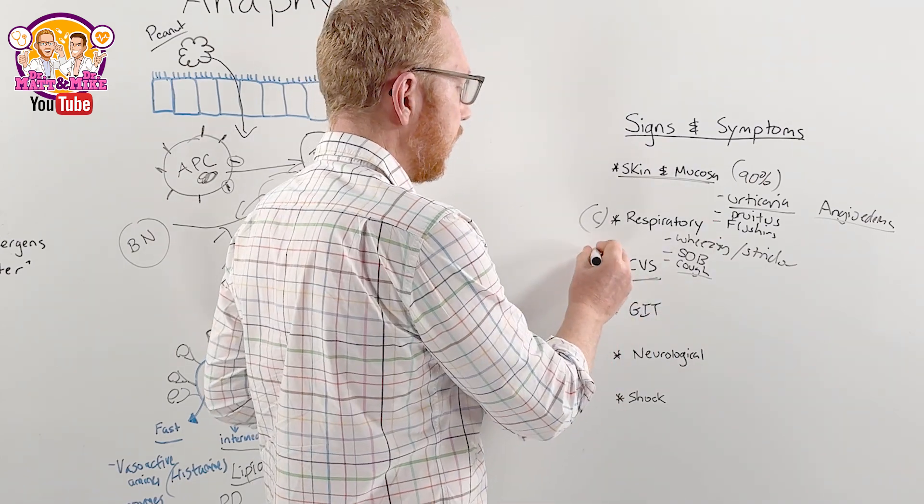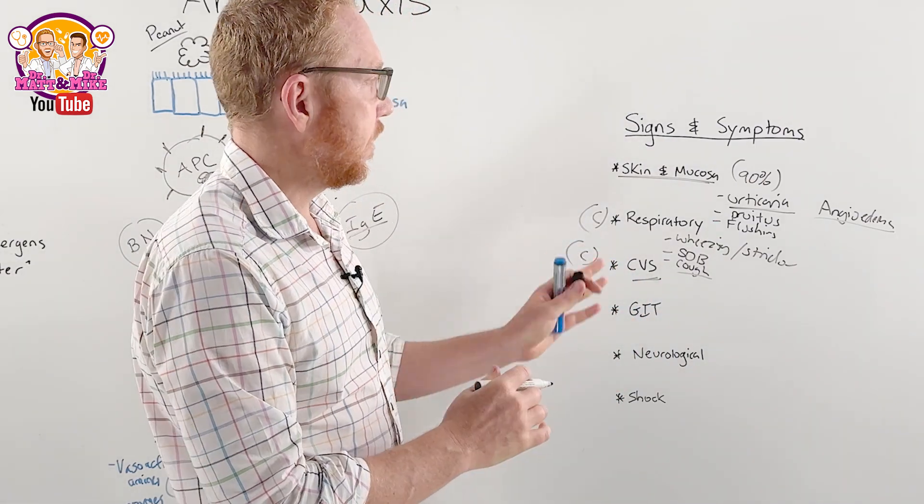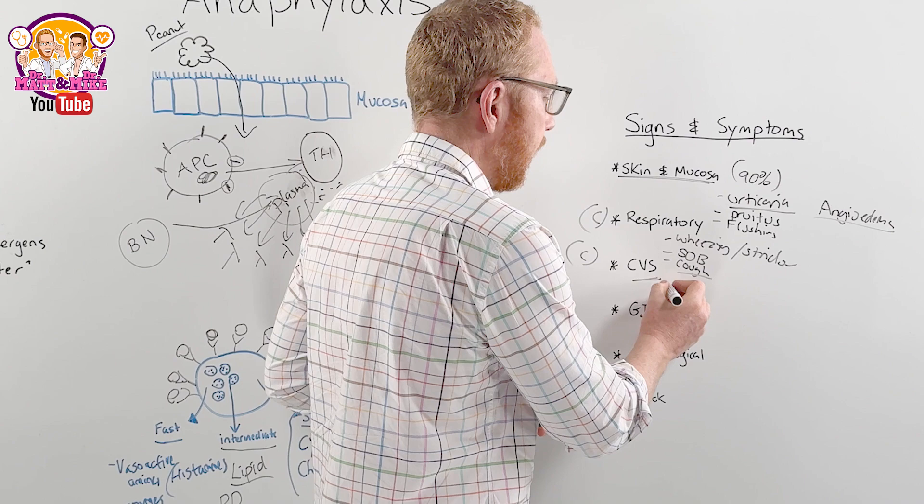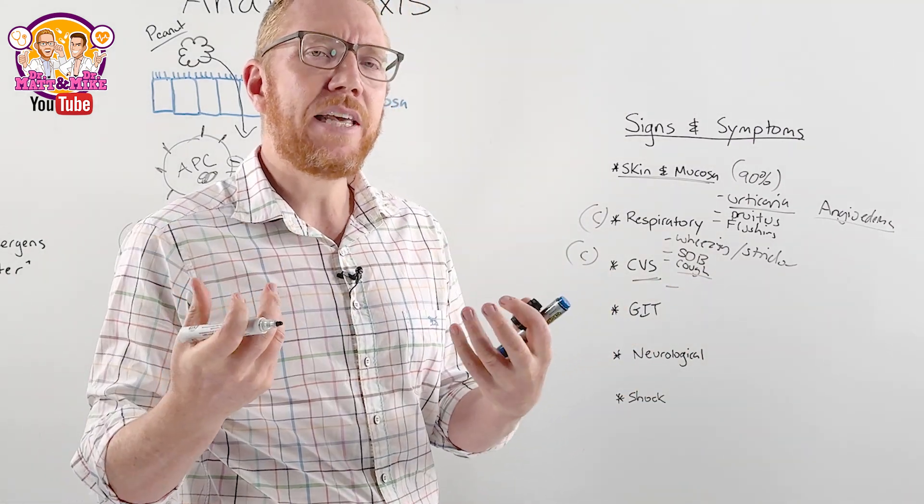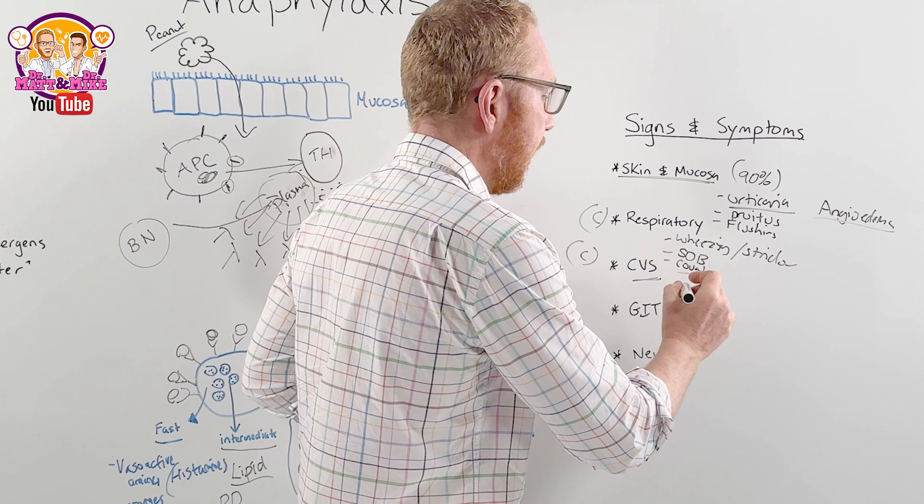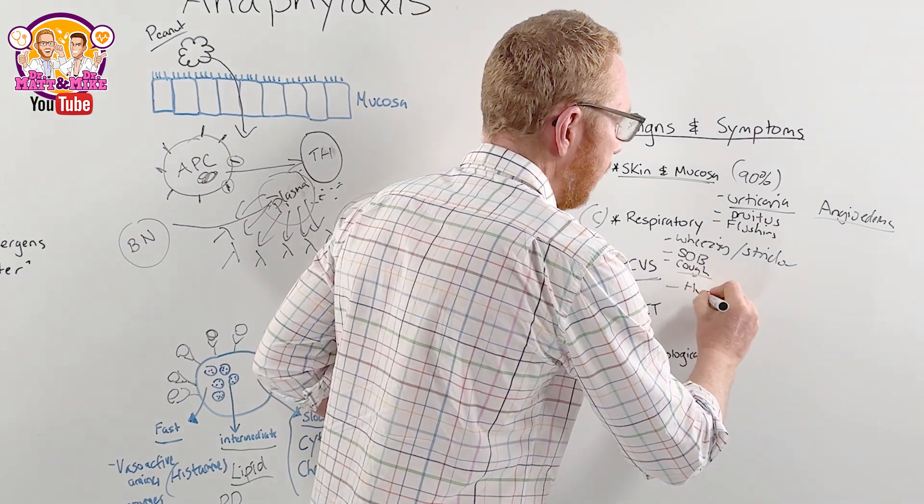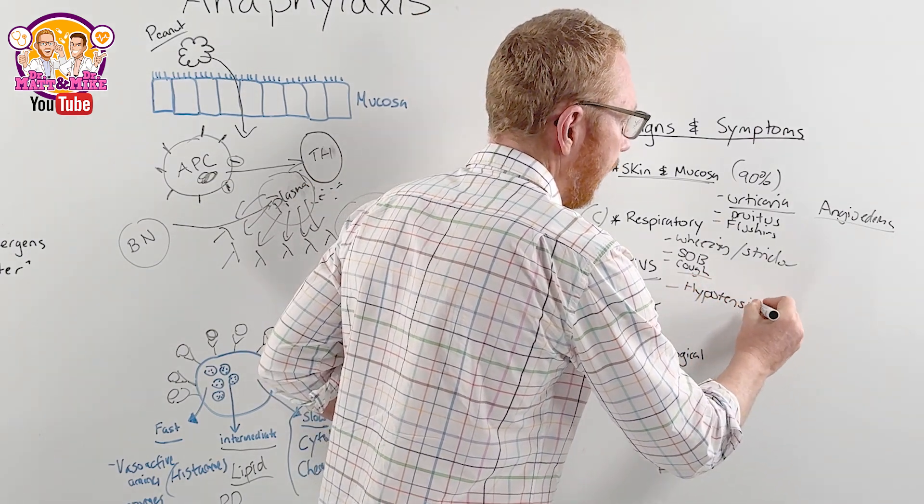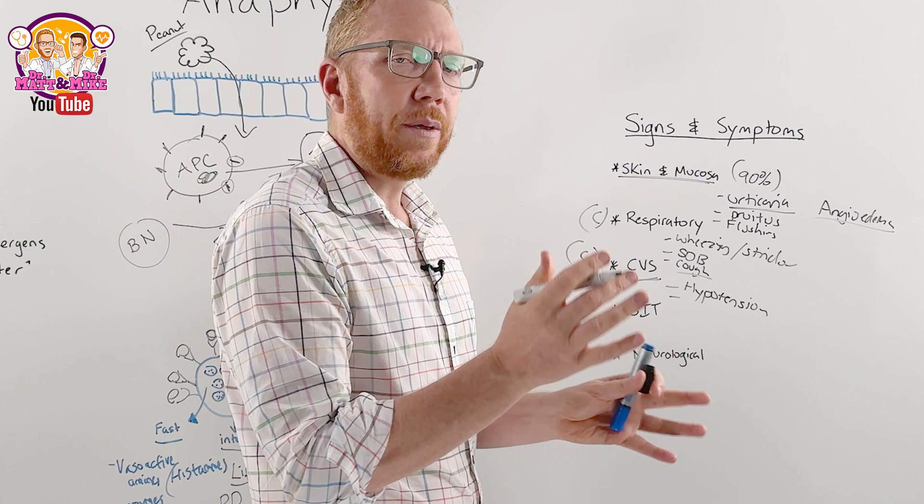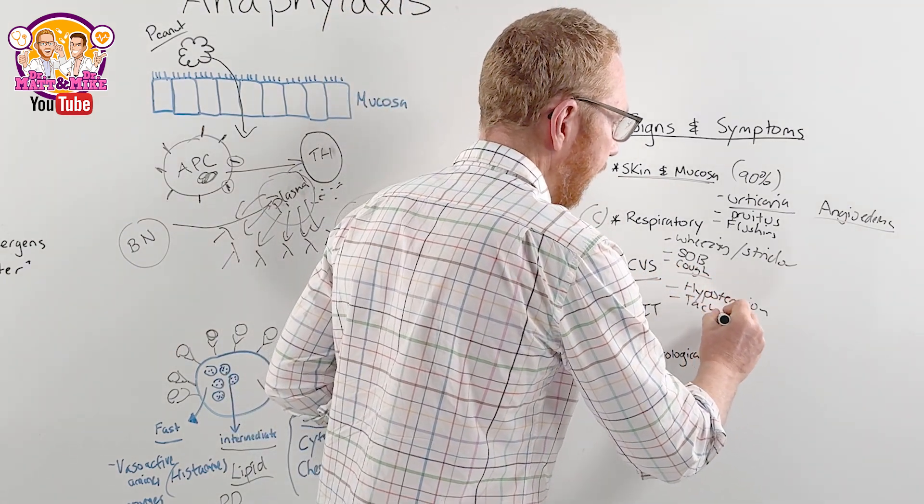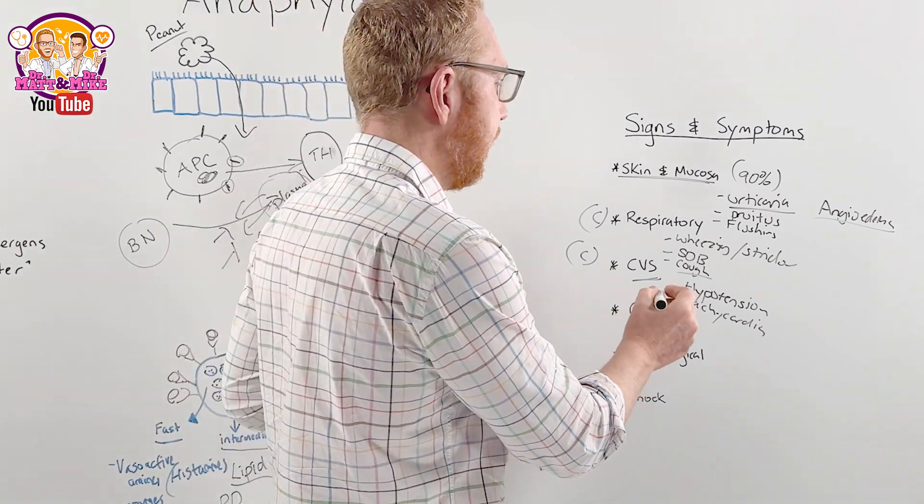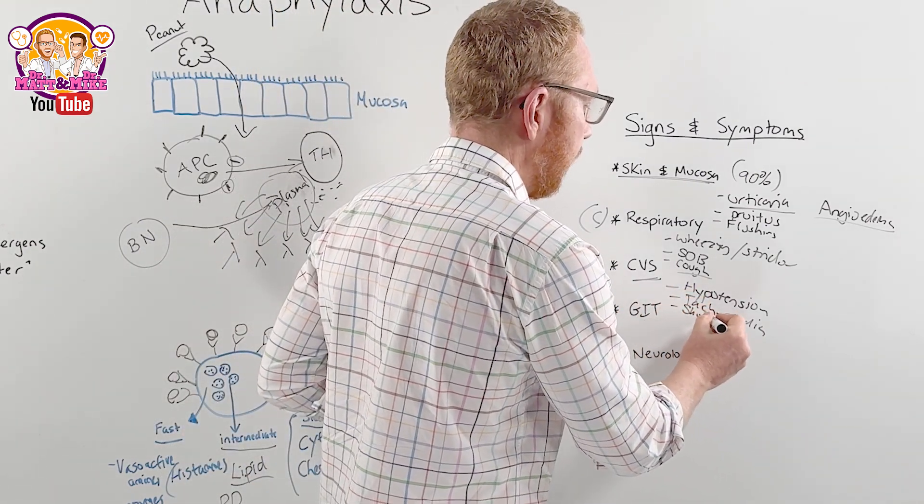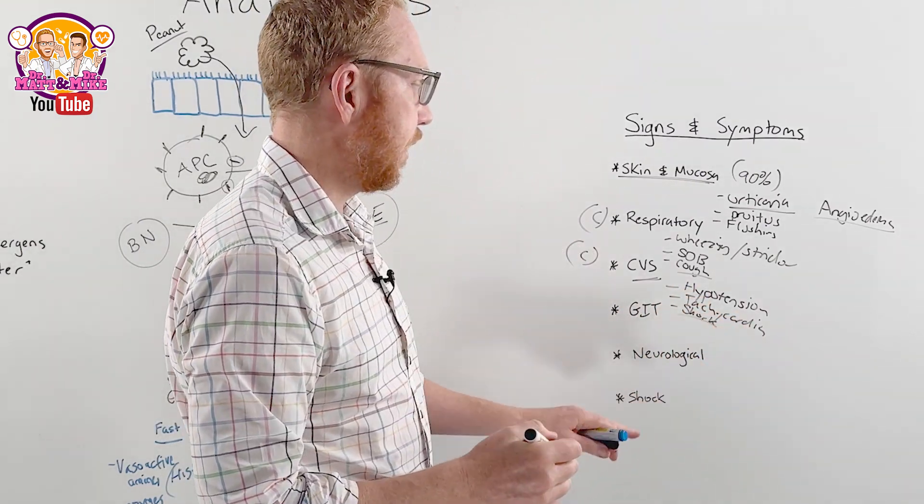In terms of cardiovascular, also, this is a common signs and symptoms associated with anaphylaxis. Because we're causing so much vasodilation in blood vessels and they become leaky and we're losing volume, we're going to get hypotension. So hypotension, we're going to get a rebound tachycardia. So tachycardia because we're trying to counter the low blood pressure. And then if this doesn't rectify, we can go into shock, which I'll go through in a second.